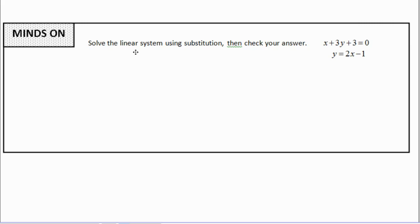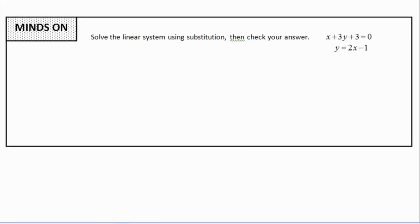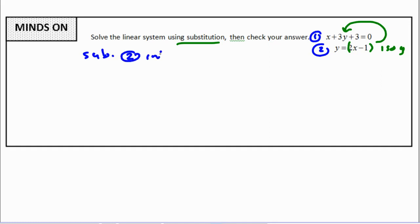Here we want to solve the linear system using substitution — the previous lesson. We always said that if we could isolate y or x, then it makes it easier because we would have this right side that we could substitute into the other y. We always call one equation 1 and the other equation 2. In this case, we are going to substitute equation 2 into equation 1.